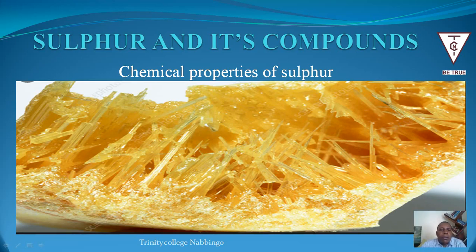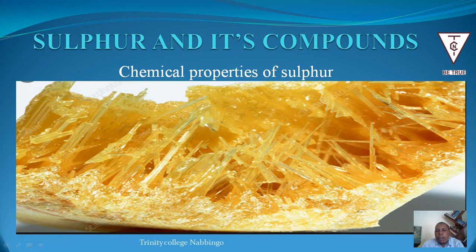Hello from wherever you are. Today our focus will be on sulfur and its compounds — specifically the chemical properties of sulfur. You might remember the last time we discussed general information about sulfur: its occurrence, how it can be obtained from the ground mainly by the Frasch process, and the allotropes of sulfur. We finalized that lesson by discussing the physical properties of sulfur. Today we want to discuss the chemical properties of sulfur.